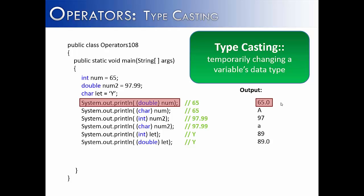On the first line, we start with the integer 65, and we cast it into a double. When it's cast, it's going to go from 65 to 65.0. That .0 is appended on the end because it is no longer an integer data type, but it is a double data type.